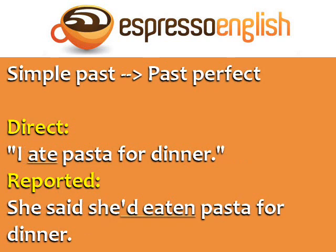Simple past verbs become past perfect. Direct: 'I ate pasta for dinner.' Reported: She said she'd eaten pasta for dinner.